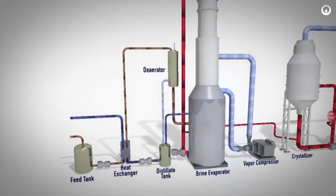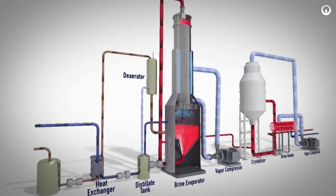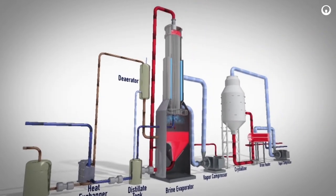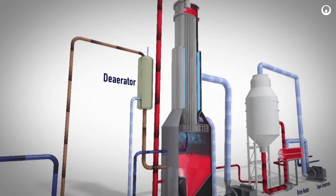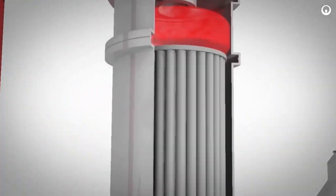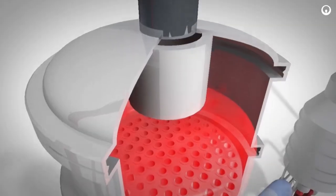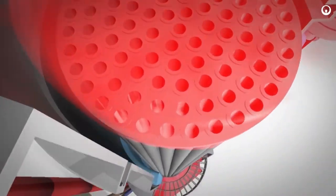The brine from the deaerator enters the sump and mixes with a large volume of brine. Brine is transferred from the sump to the flood box located at the top of the evaporator heat transfer tubes using the recirculating pump. Brine in the flood box is distributed in each of the heat transfer tubes.